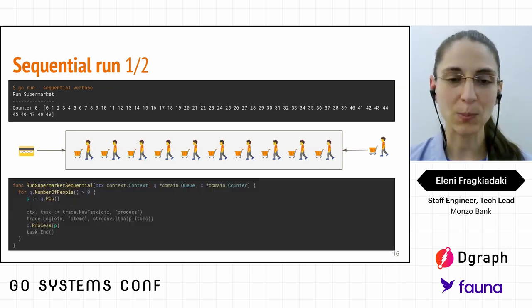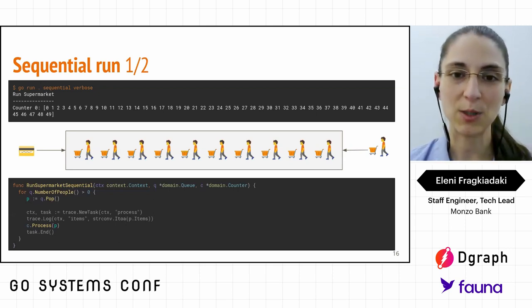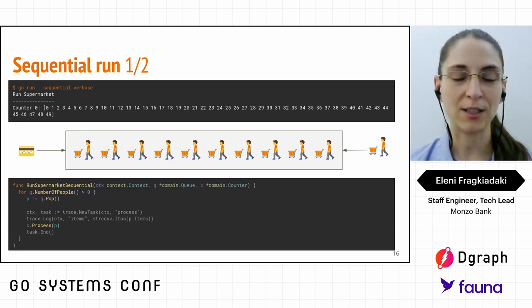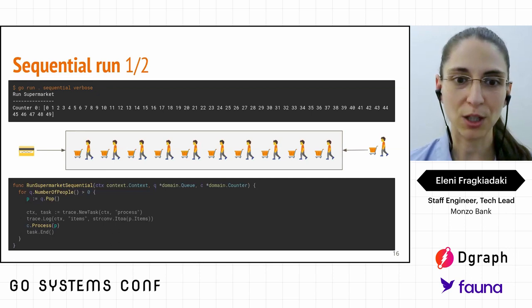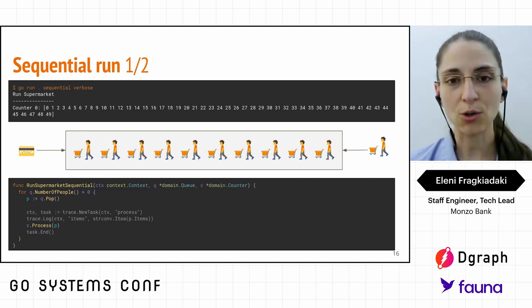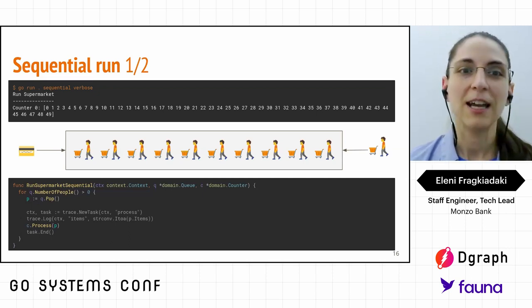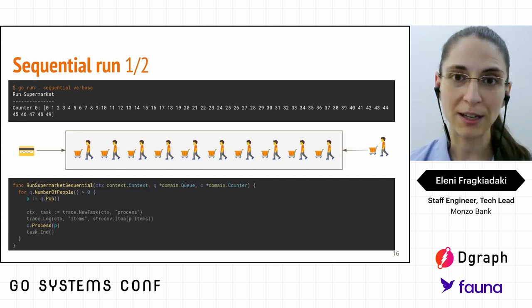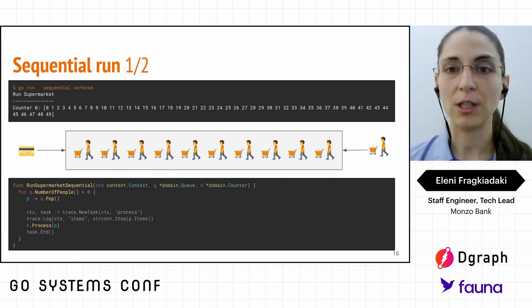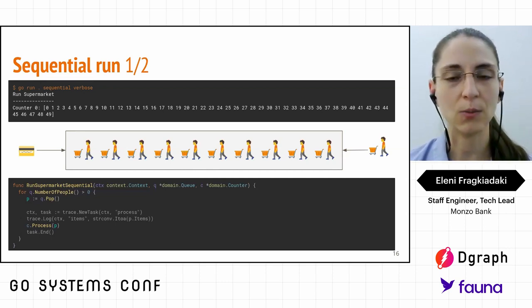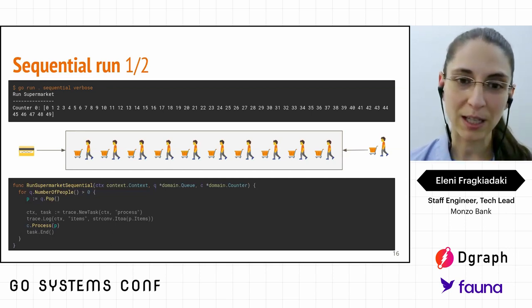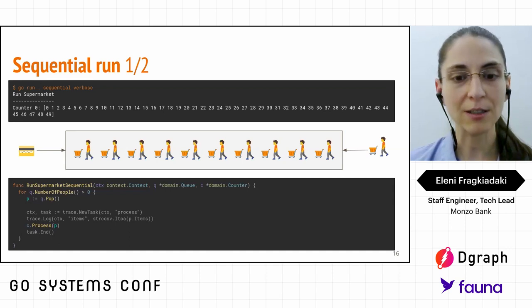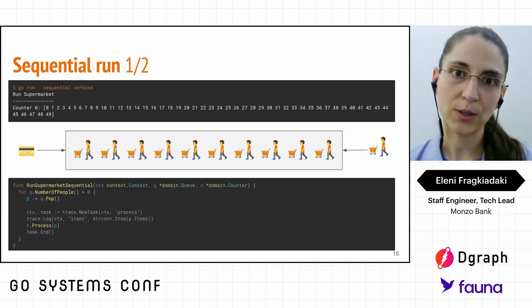Looking at the code, the RunSupermarketSequential function accepts a context, a queue object, and a counter object. It has a for loop: for as long as the number of people in the queue is greater than zero, pop the next person, process it, and complete. We also have three grayed-out lines of code that use Go's trace tool to create trace outputs — creating a new task and an item event holding the number of items for the current person being processed.